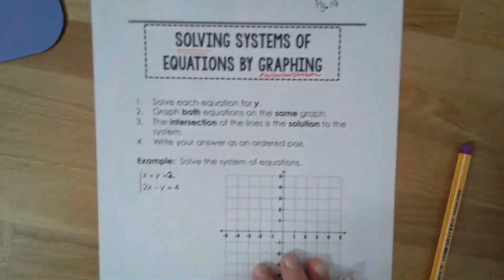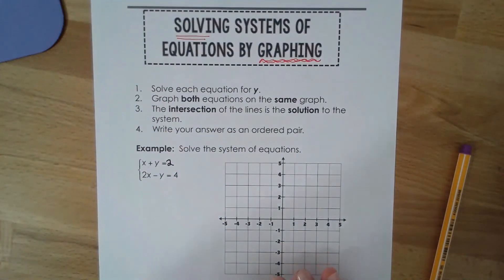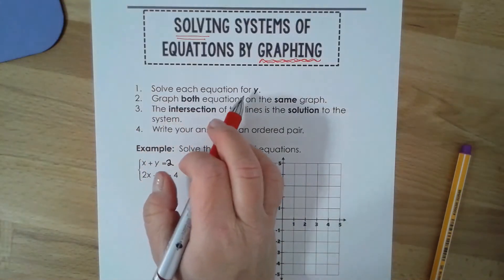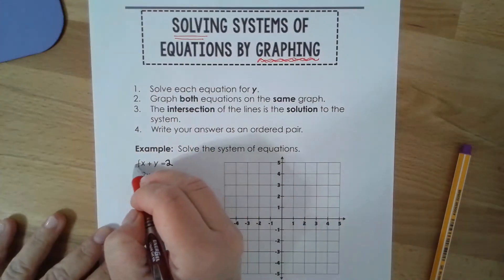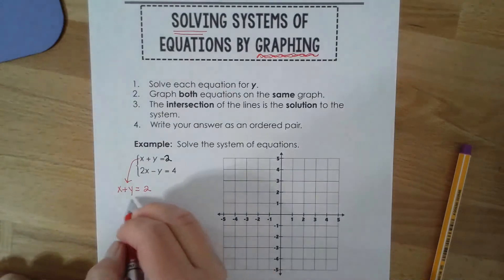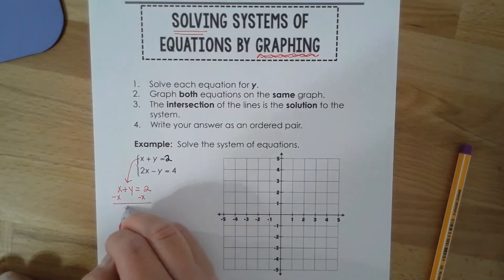So the steps are written for you. So step number one, solve each equation for y. So I'm going to do that first. So I'm going to solve my first equation for y, so that means get y alone. Remember, we reviewed this yesterday, so it's negative x plus 2.